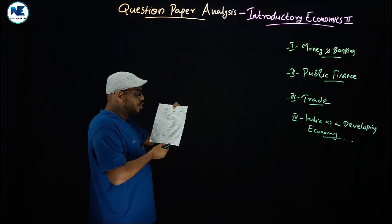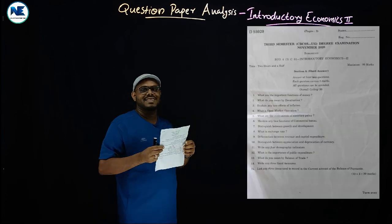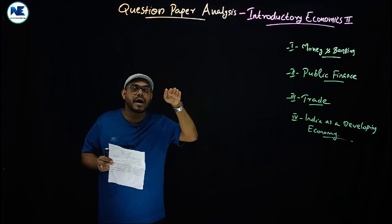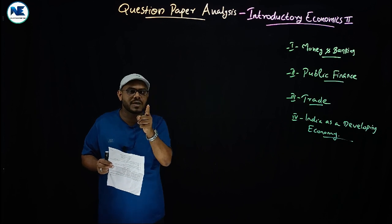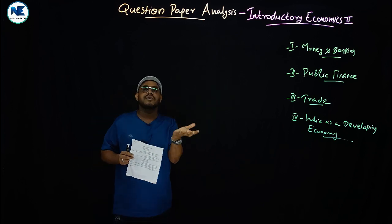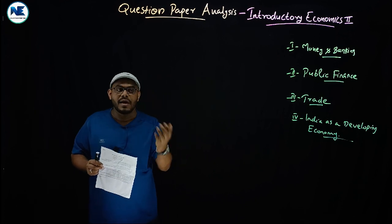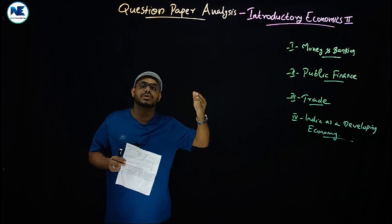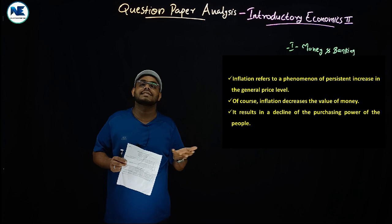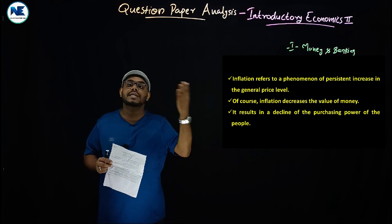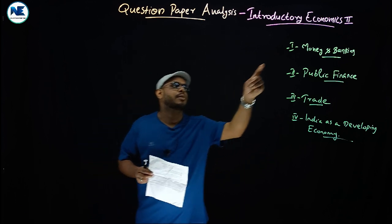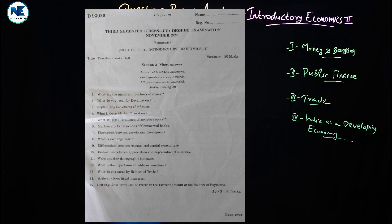The third question: explain any two effects of inflation. Inflation is the continuous and persistent rise in the general price level or fall in the value of money. Study the types of inflation, effects of inflation, and measures to control inflation — including monetary policy and fiscal policy. Effects include reduced purchasing power, increased inequality, and major economic imbalances. Inflation is also an important topic in Module 1.